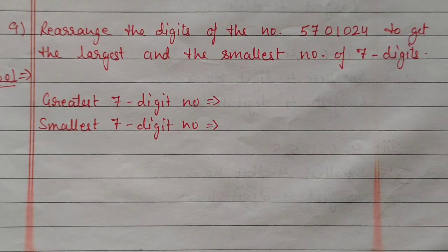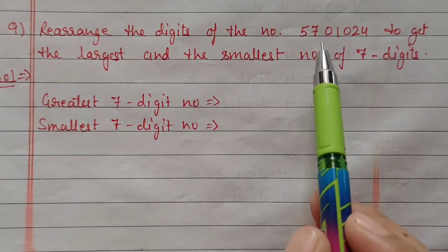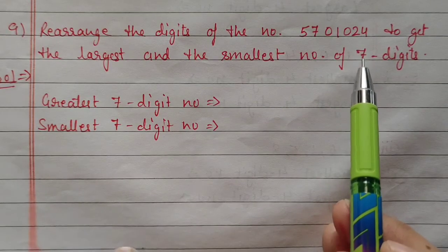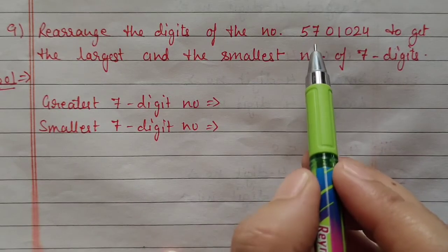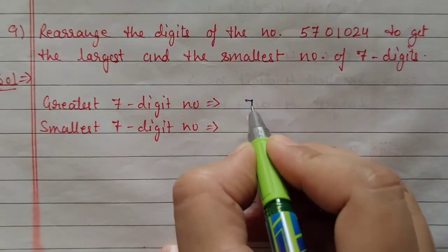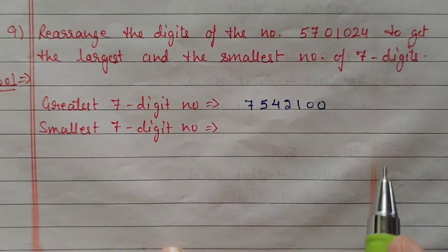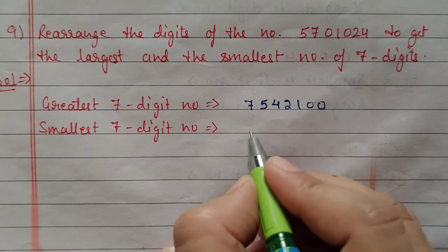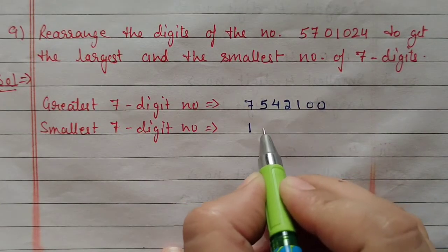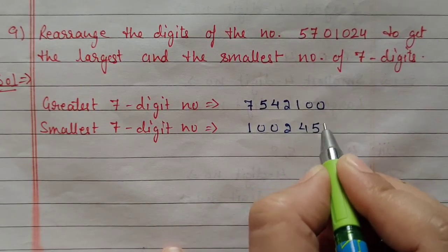Next question number 9: rearrange the digits of 5701024 to get the largest and smallest 7-digit number. Total 7 digits are available. To make the largest number, keep the largest digit at the first place: 7 is largest, then 5, 4, 2, 1, 0, 0 — giving 7542100. To make the smallest number, do not keep 0 at the first place. The next smallest is 1, so 1 comes first, then two zeros, then remaining digits 2, 4, 5, 7 — giving 1002457.